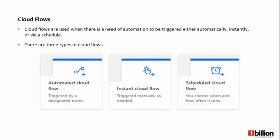Automated cloud flows are triggered using a predefined event. As explained previously, this event can be receiving a relevant email or adding a video to your YouTube channel. According to these kinds of events, it will trigger the Power Automate cloud flow.